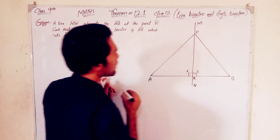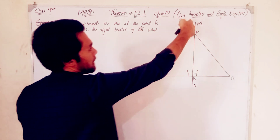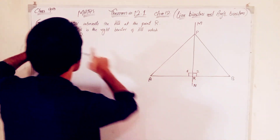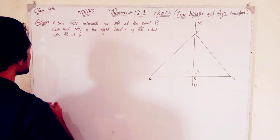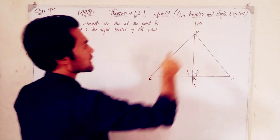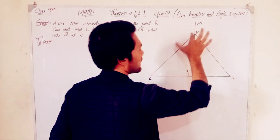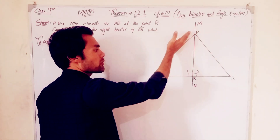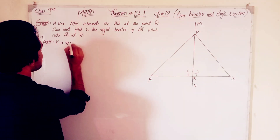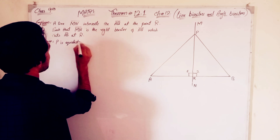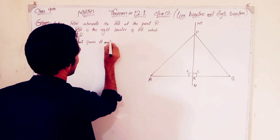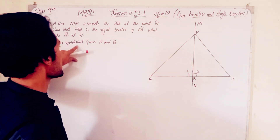The right bisector cuts A and B — it is 2 proof. PA is equal to PB. The P point is equidistant from A and B. So PA is equal to PB — P is equidistant from A and B.